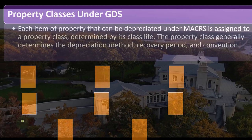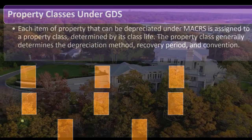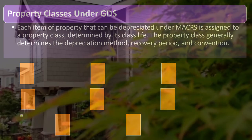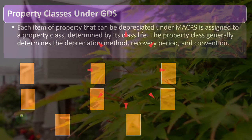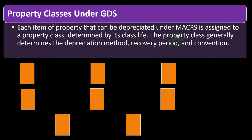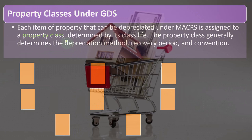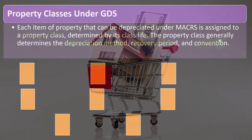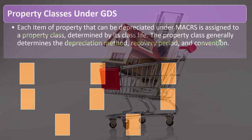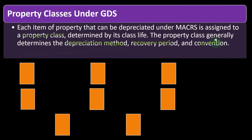Under MACRS, property classes under GDS: each item of depreciable property is assigned a property class determined by its class life. The property class generally determines the depreciation method, recovery period, and convention. Once you've identified the right class — the right bucket for your asset — the tax code is quite stringent after that point, leaving you with very limited options.